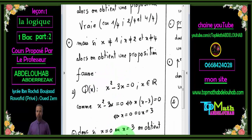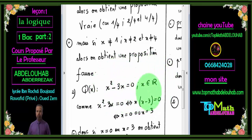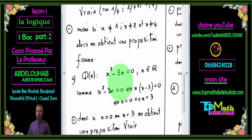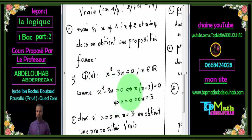On va prendre un autre exemple. Prenons la fonction prépositionnelle : x²−3x=0, avec x appartenant à ℝ. Là aussi, c'est un énoncé mathématique — personne ne peut dire qu'il est vrai ou faux, parce qu'on dispose d'une variable. Il faut remplacer x par des valeurs précises. Pour trouver les valeurs qui donnent un sens vrai, on résout cette équation du second degré. Puisque c est nul, on factorise : x(x−3)=0, donc x=0 ou x=3.